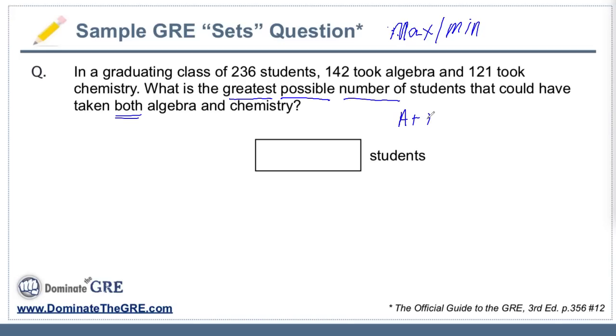It's a two sets problem where ordinarily we would be able to use our classic formula: A plus B minus both plus N equals the total. Group A plus group B, minus both being the overlap, plus neither equals the total.